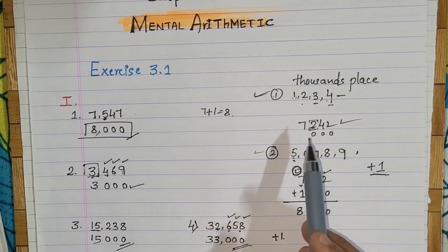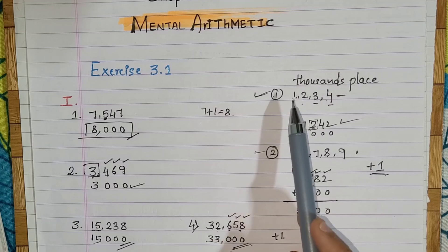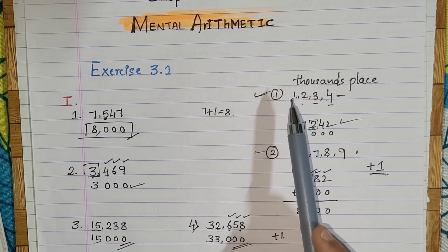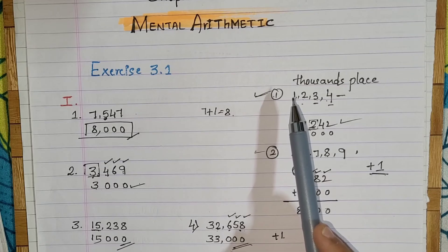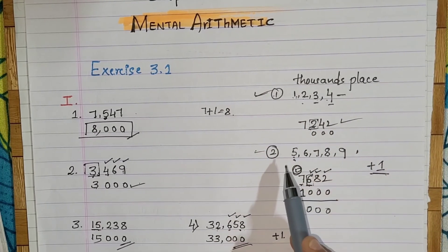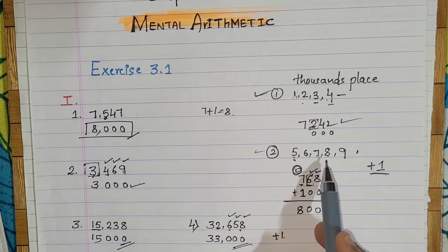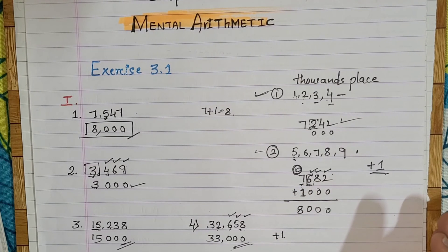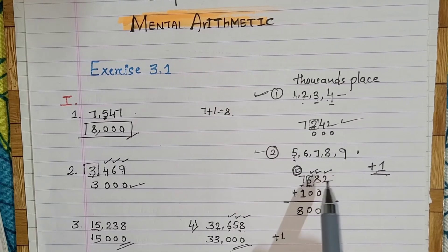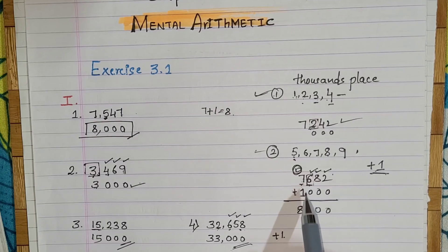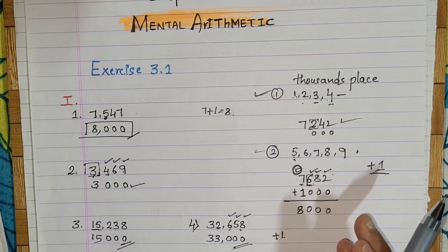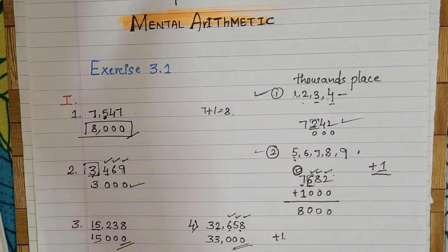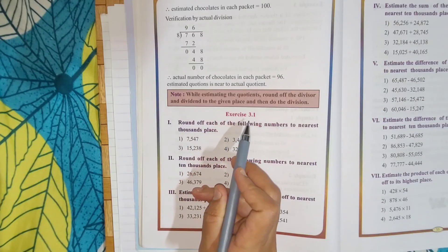Is that clear, children? To summarize briefly: if the digit in the hundred place is one, two, three, or four, replace unit, ten, and hundred by zero and leave the thousand place unchanged. If the digit in the hundred place is five, six, seven, eight, or nine, replace unit, ten, and hundred by zero and add one to the number in the thousand place. This is how you round off numbers to the nearest thousand place. We have completed the first part of exercise 3.1.